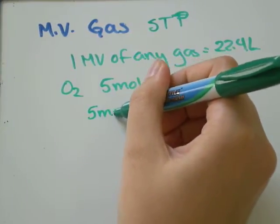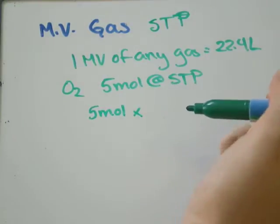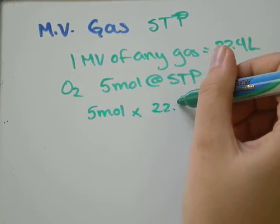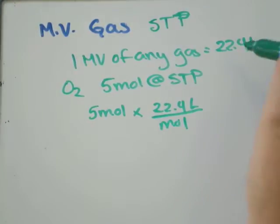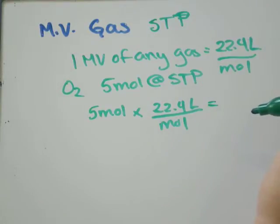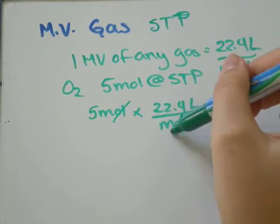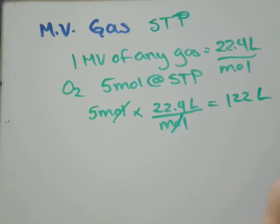So, we will go 5 moles times 22.4 liters per mole. That's how much space one mole of any gas measures at STP equals 5 times 22.4 would equal 112. Moles canceled out, and we're left with a unit of liters.